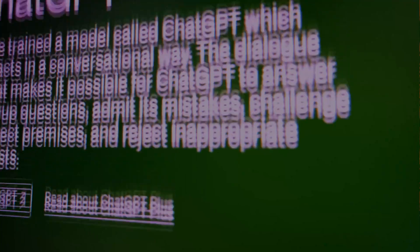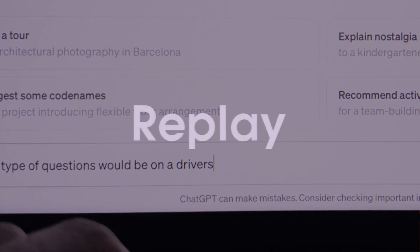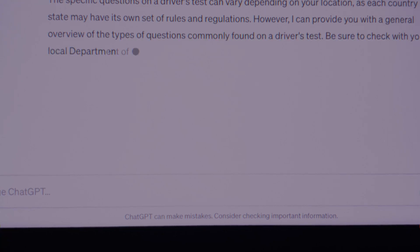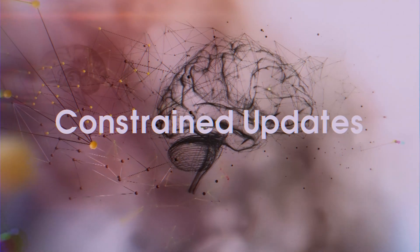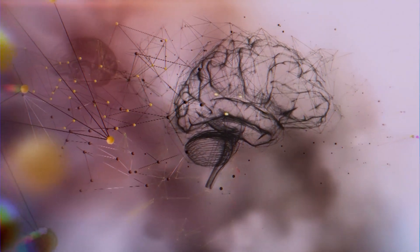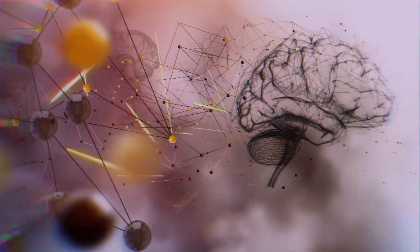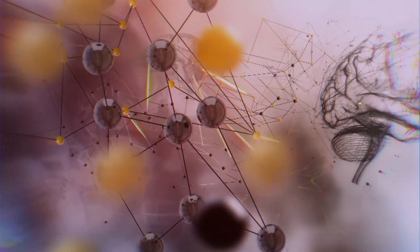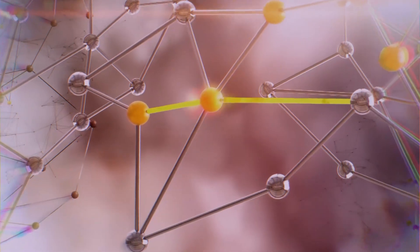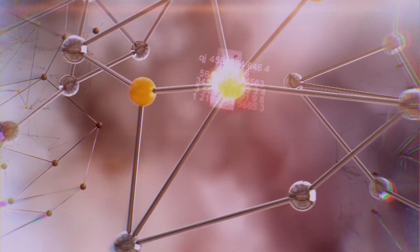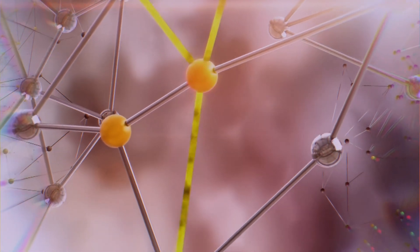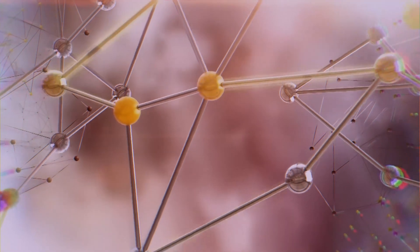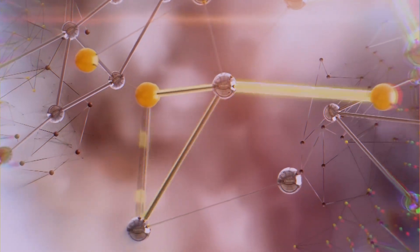The researchers propose a few potential solutions. One is replay, where the AI occasionally revisits old information while learning new things, like a student reviewing old notes. Another is constrained updates, which puts limits on how much the AI's brain can be rewired at any one time, protecting the most critical connections. This challenge of forgetting is a huge hurdle, but it's also the final piece of the puzzle. Overcoming it will unlock the true vision behind SEAL, a future where AI isn't just a tool, but something much, much more.